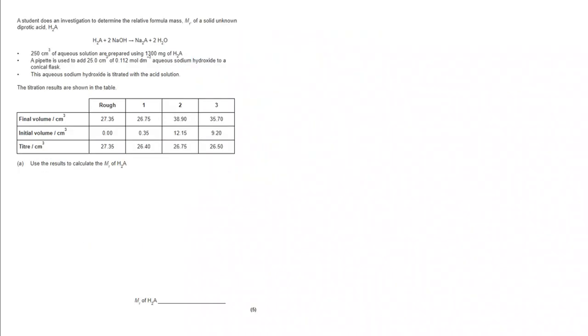So let's start with A. Hopefully you've had a chance to go through it. We've got a reaction between a diprotic unknown acid, H2A, with NaOH. We've got lots of different masses, volumes, concentrations provided, and we've also got the titer information that we can see in the table.